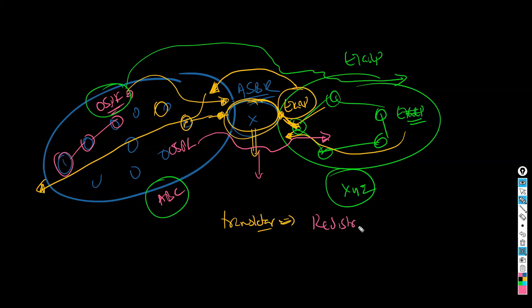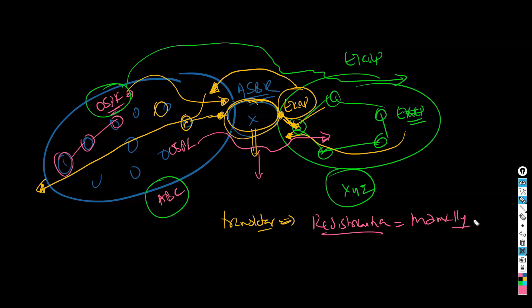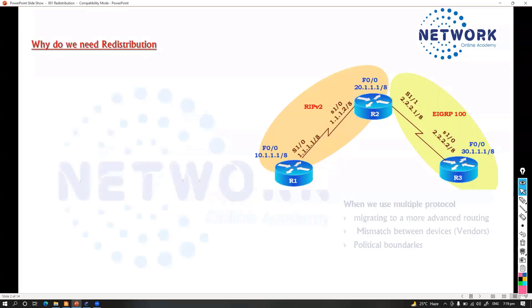We call this process of translating routes from one protocol to another redistribution. It's a concept where multiple routing protocols are configured for various reasons, and you still need to exchange routes between them. The condition is that redistribution must be done manually — it is not an automated process.